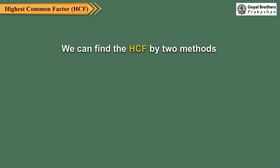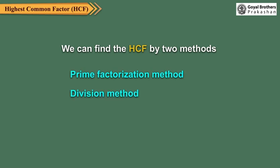We can find the HCF by two methods: the prime factorization method and the division method. To find the HCF by the prime factorization method, we find the prime factors of the given numbers, list the prime factors which are common to all, and the product of the common prime factors is the required HCF.